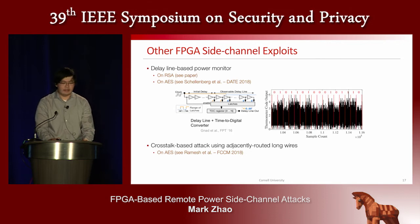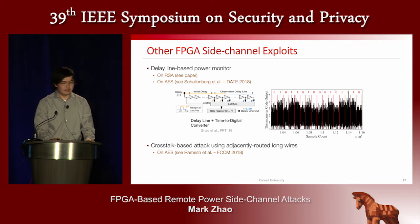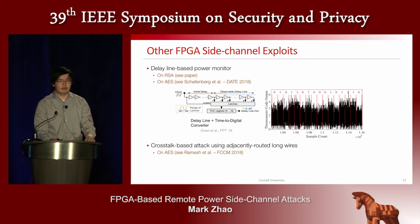Our paper also shows that the ring oscillator is not the only way to exploit this side channel. We also implement a delay line-based power monitor and show that the same attack can be performed on RSA. A concurrent work uses a similar delay line-based power monitor to perform a power analysis attack on AES, and another concurrent work demonstrates a crosstalk-based attack using adjacently routed long wires, also targeting AES.